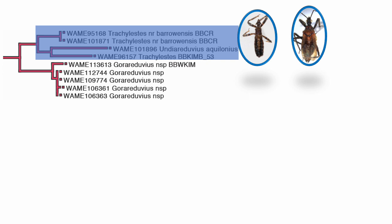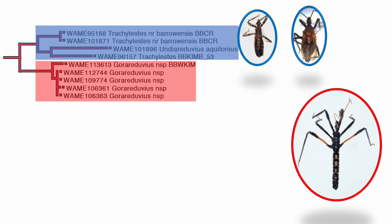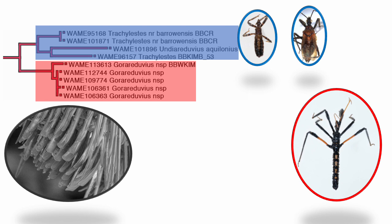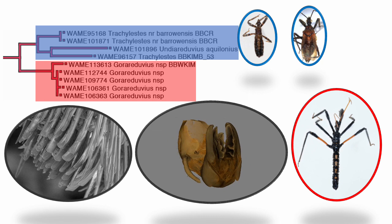Focusing on the first clade, highlighted in blue we have two genera: Trachylestes and Undiariduvius. Undiariduvius is that genus that Malipatil described gathering resin. Trachylestes also seems to be doing the same thing — all of our specimens are coated with resin and we've been collecting them off of triodia. I still need to look at them more closely to see whether they're really one genus or whether there's more going on. And then we have Goriduvius — this is a picture of the new species Fernando and I are describing. One thing that unites these is that they all have these spatulate bristles on the tips of the fore tibia.